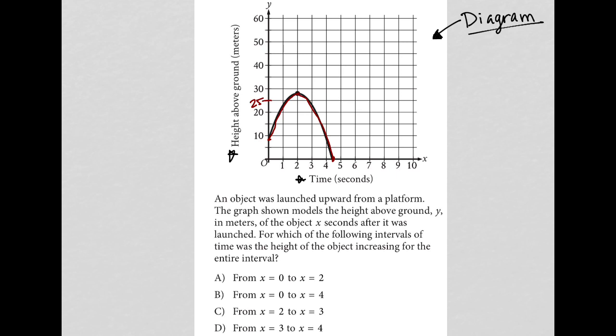So let's see what the question is actually telling us. This question says an object was launched upward from a platform, so that means that this platform must have been this height which again we'd assume is seven, eight, somewhere around there.